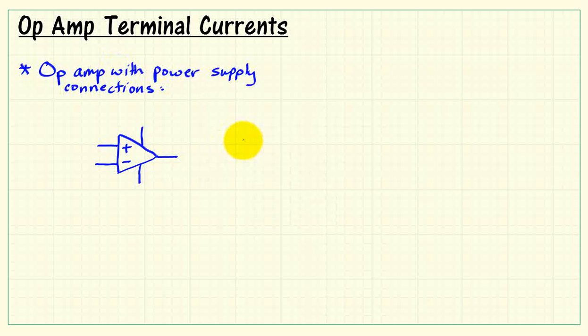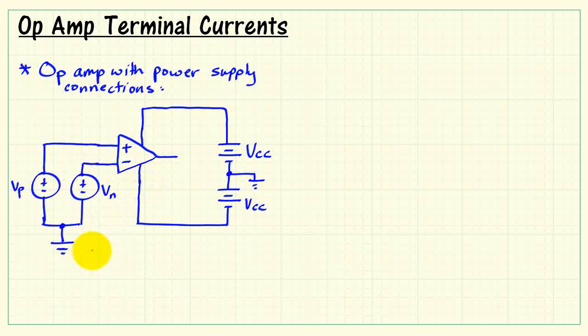Let me draw the details of the power supply connections. In fact, we can think of this as two batteries connected at ground, one to establish the positive supply voltage and another to establish the negative supply voltage.